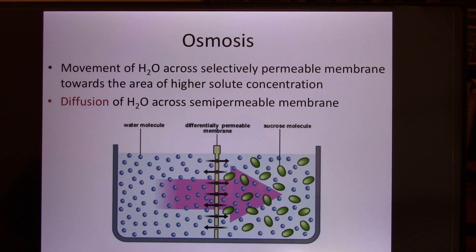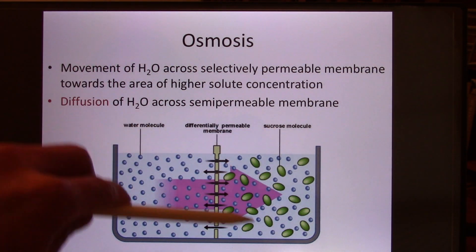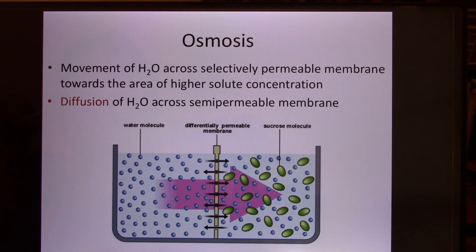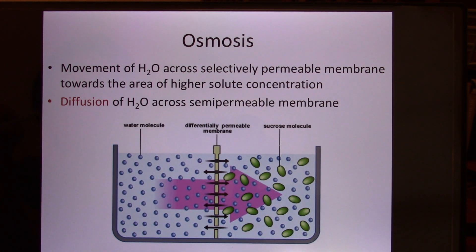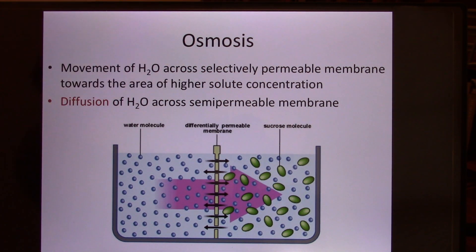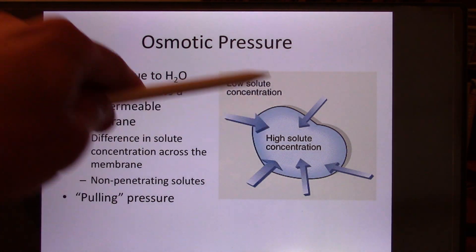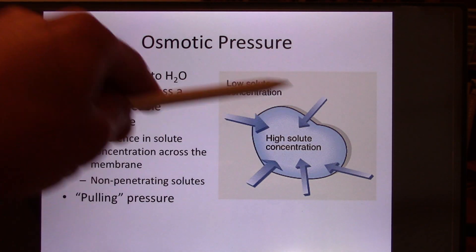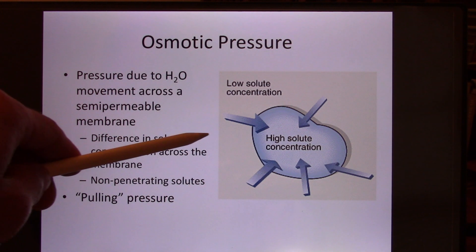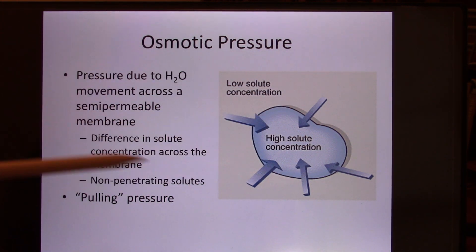The force that makes water move is the concentration gradient — the concentration gradient of the non-penetrating particle solute. Water moves to dilute it. The water diffuses through the cell membrane — we don't call it water diffusion, we call it osmosis. So osmosis is water diffusion. Because water is so important in physiology, we call it osmosis. The pressure that makes the water move once you create the concentration gradient is called osmotic pressure. If you have more non-penetrating solute on one side, it will attract more water to move — that means osmotic pressure is higher.